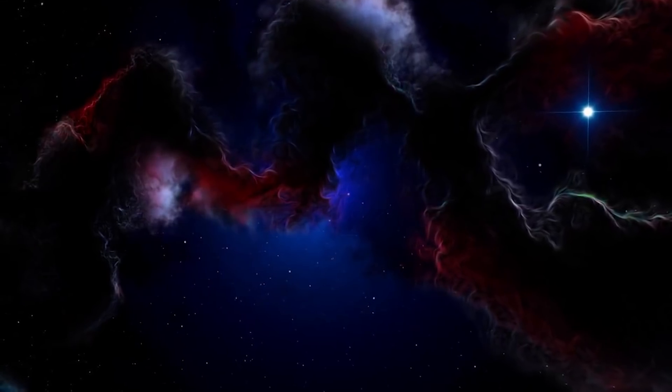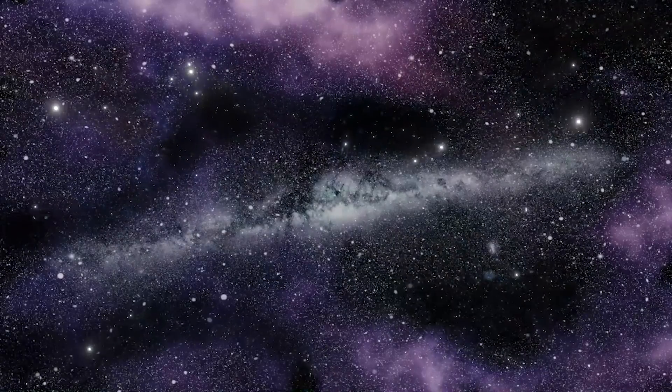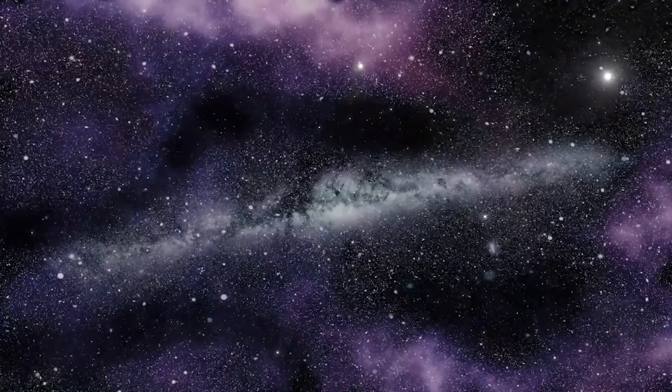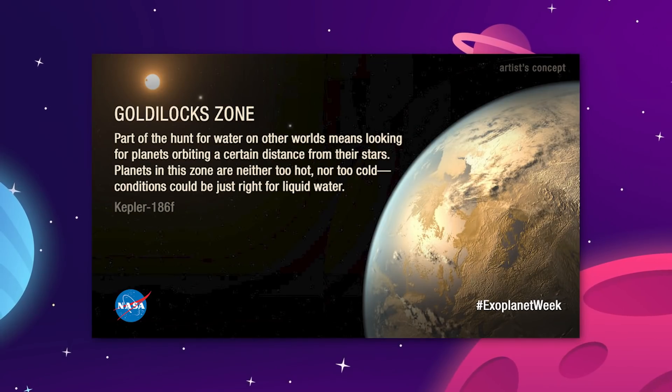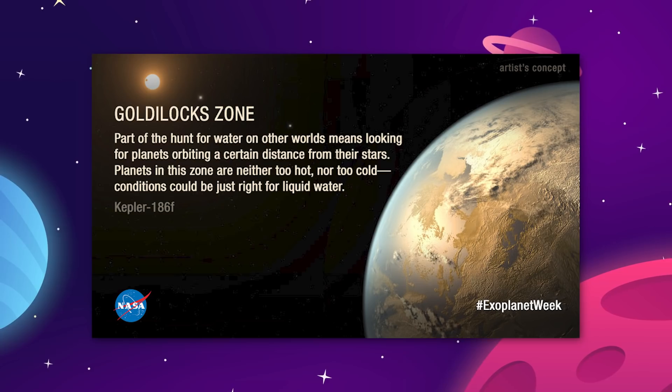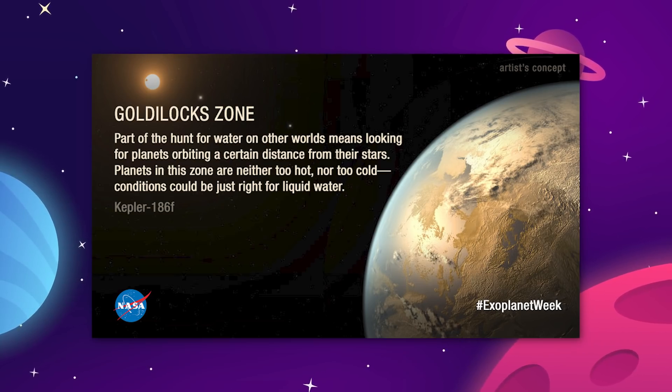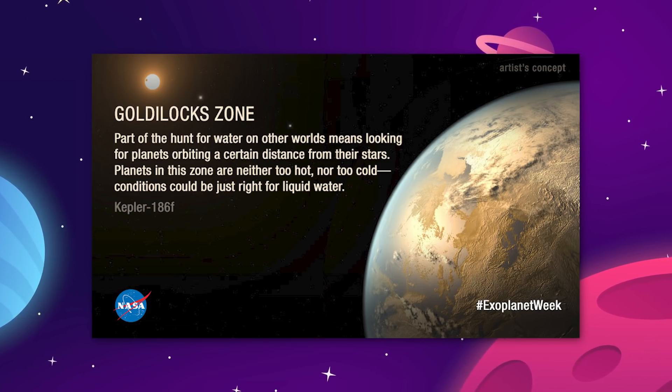So we have to take our search further into deep space, and that's where things get interesting. We are looking for planets that sit in the Goldilocks zone in their solar system, meaning they are not too close or too far from the star that they orbit and should have just the right combination of temperature and atmospheric pressure for liquid water to exist without boiling away or freezing solid.